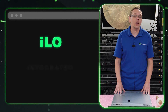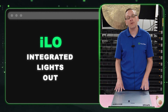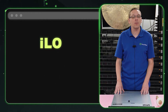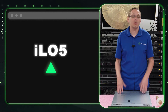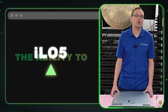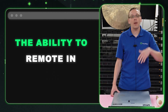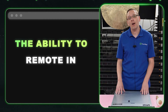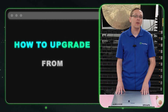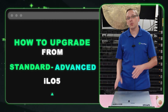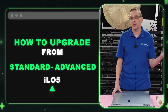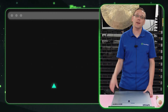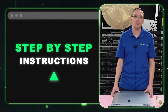ILO stands for Integrated Lights Out. The version that you're going to get for the Gen 10 Server is going to be ILO 5. What ILO essentially is, is the ability to remote into your server from a faraway place. In this video, we're going to show you how to upgrade from standard to advanced, which are the two types of licenses. Advanced is really what you want to have, and we're going to show you step-by-step instructions on exactly how to do that upgrade.